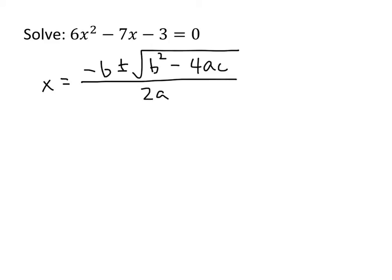So what are the a and the b and the c? Well, the a is the coefficient of x squared. The b is the coefficient of x, including that minus sign. And the c is that constant term negative 3.